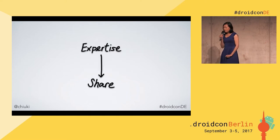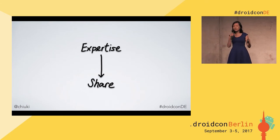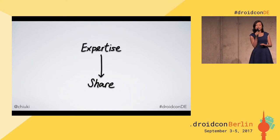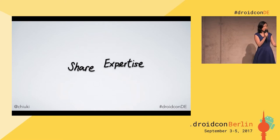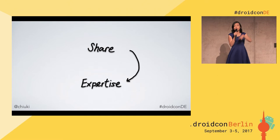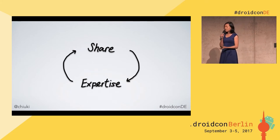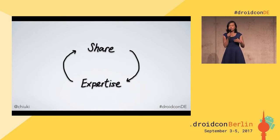You may think she shares because she knows so much — there is so much expertise it just could not be contained. But today you're going to learn the secret about being experts. The arrow doesn't go this way; it goes the other way. The more you share, the more expertise you gain, and then the more expertise you gain, the more you get to share. This is a great positive cycle for you to become an expert.